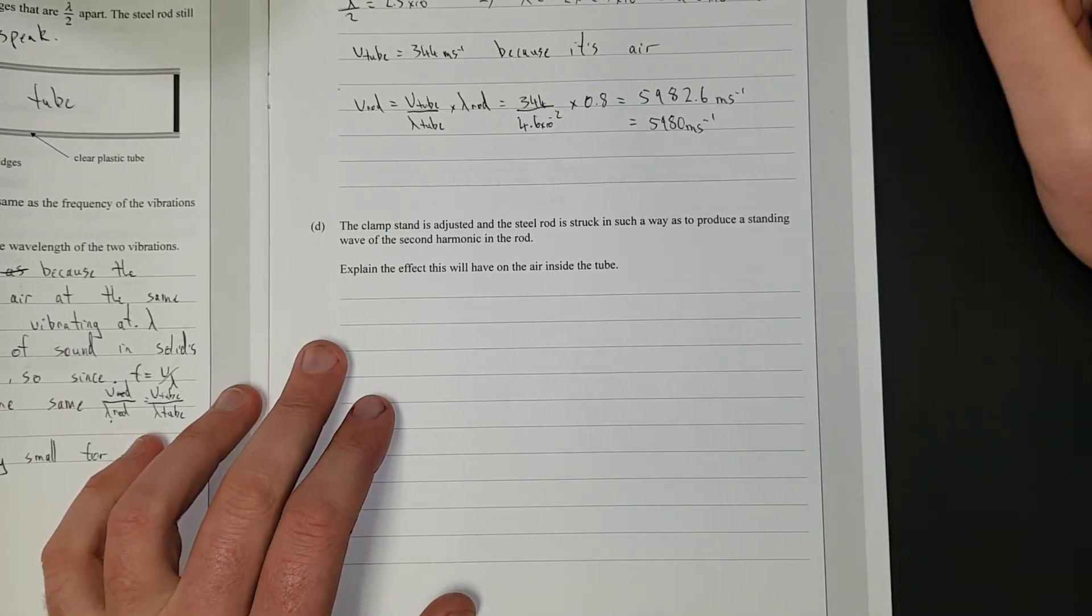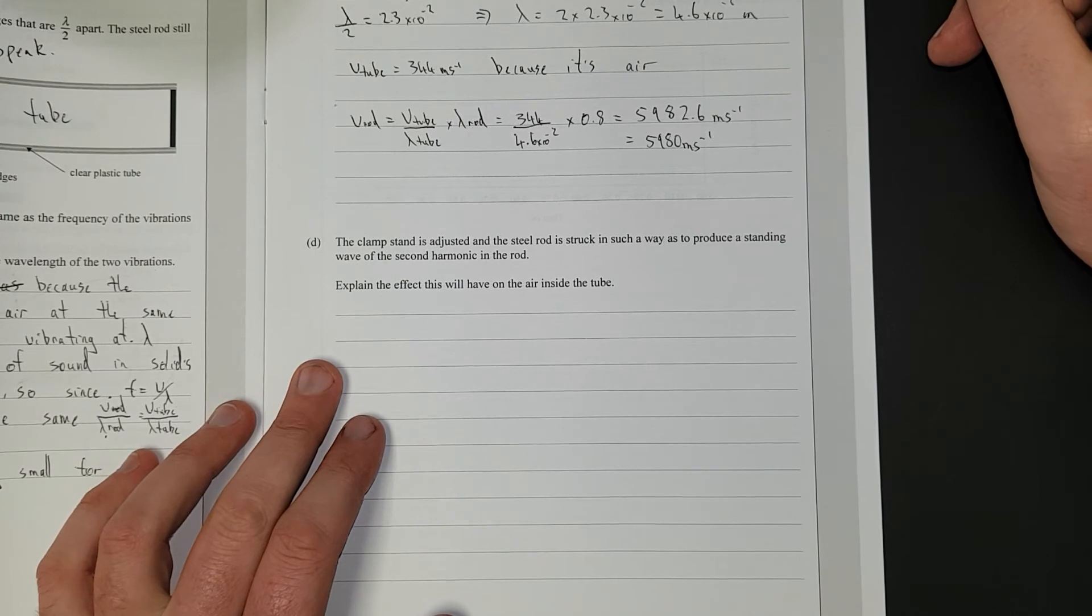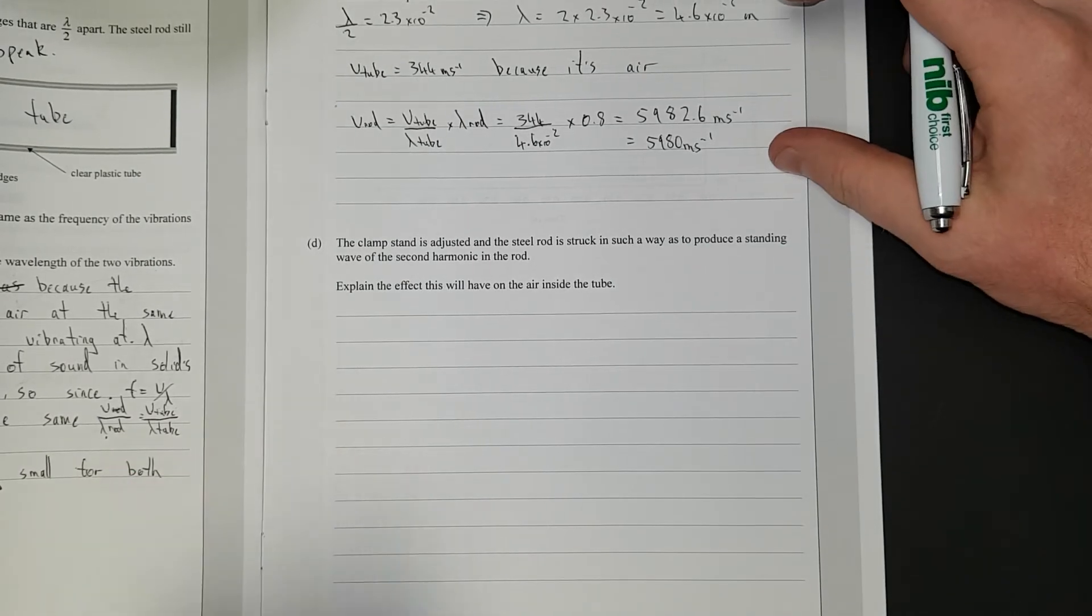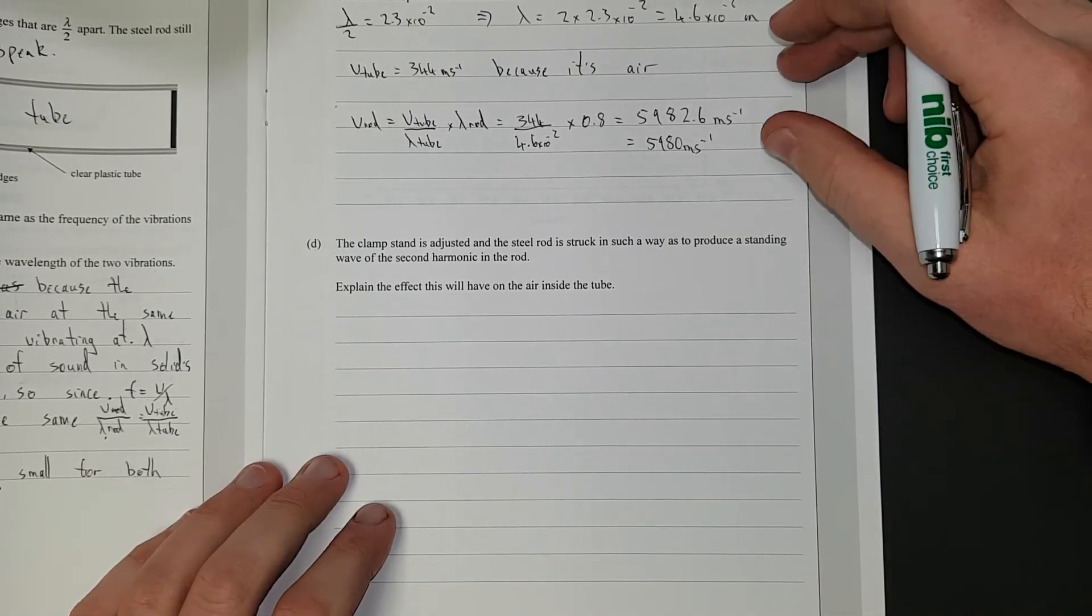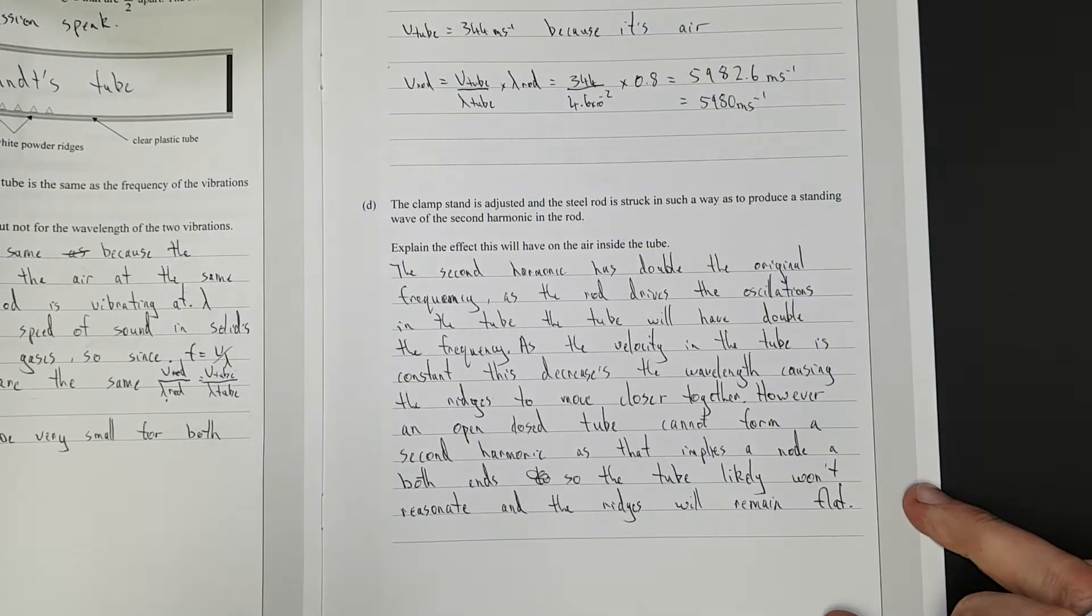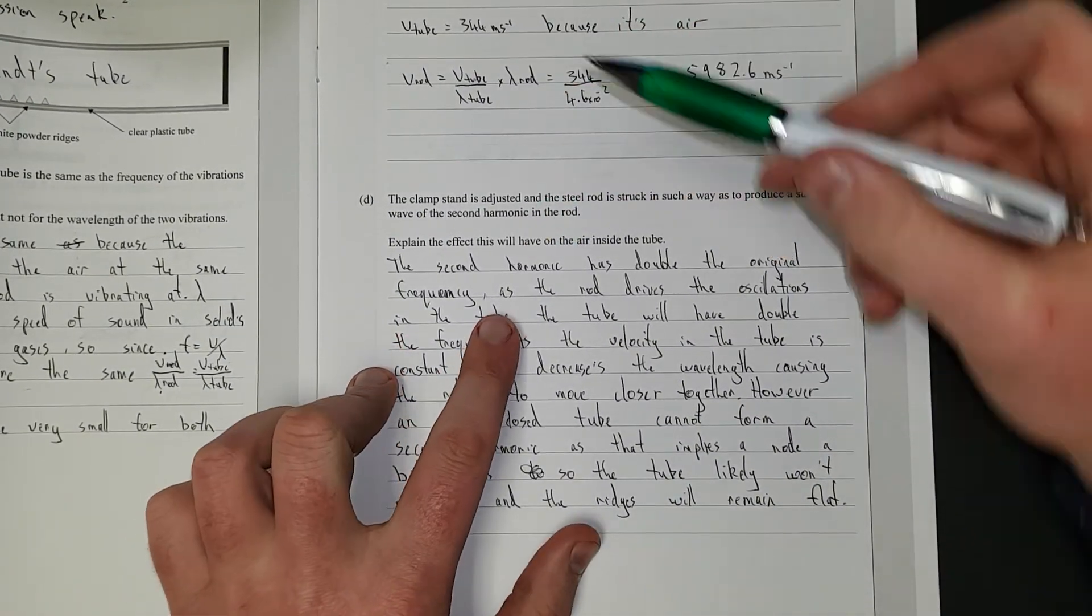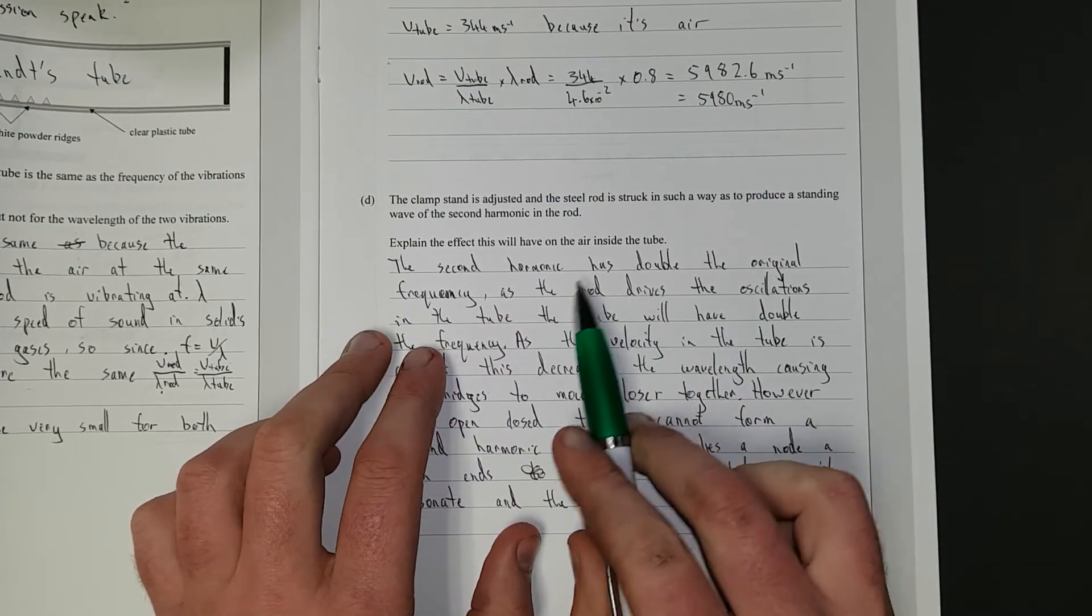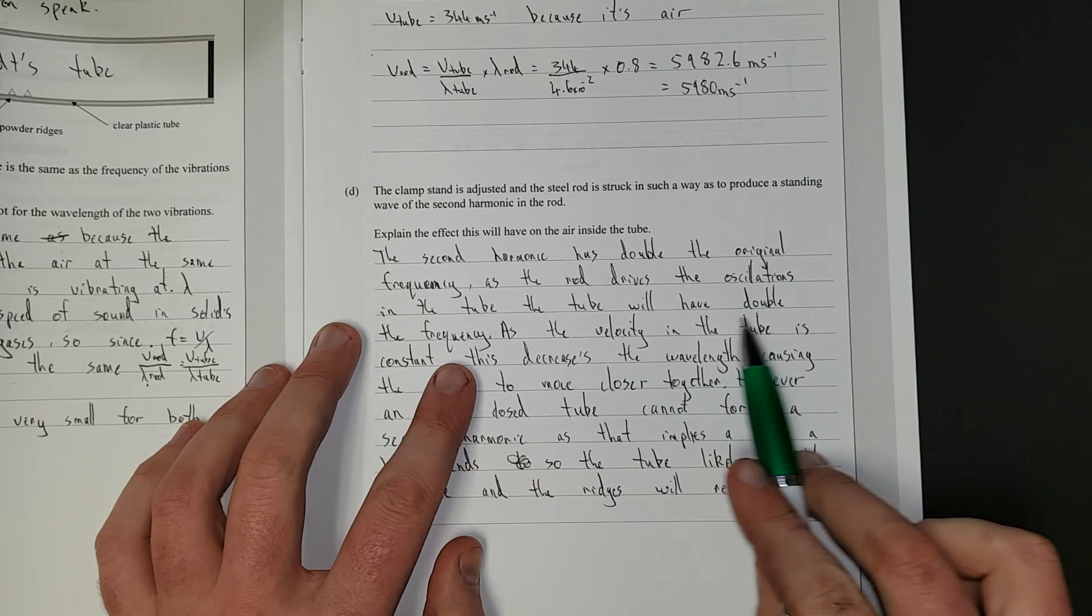Right. The clamp stand is adjusted and the steel rod is struck in such a way as to produce a standing wave of the second harmonic in the rod. Explain the effect this will have on the air inside the tube. So I'll pause it, write the answer, and then discuss. Right. So the second harmonic has doubled the original frequency. You just had to know that. As the rod drives the oscillations in the tube, the tube will have double the frequency.